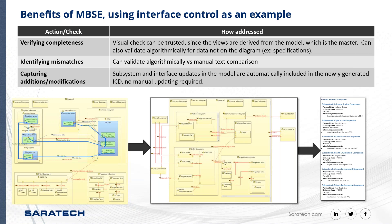When there's a mismatch, you can validate it algorithmically. For example, if the connection between the avionics subsystem and the guidance navigation control system is a command and telemetry link — the same as those connected to payload — then the specs for those should be the same, and you can validate that algorithmically versus a manual text comparison.